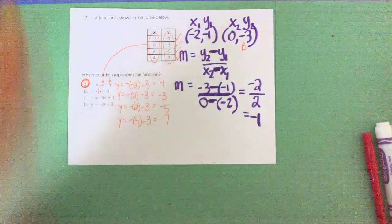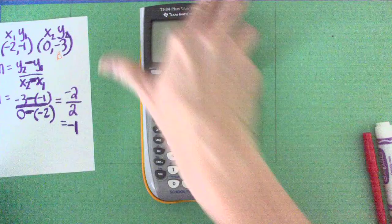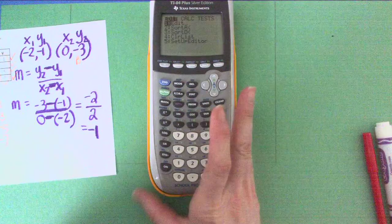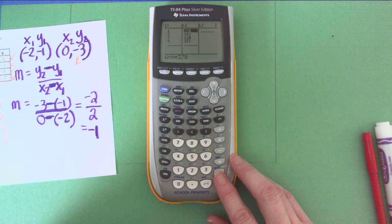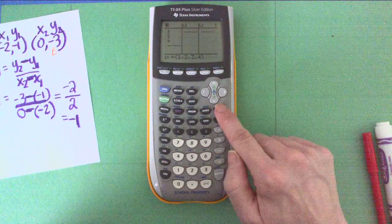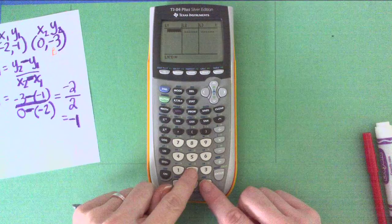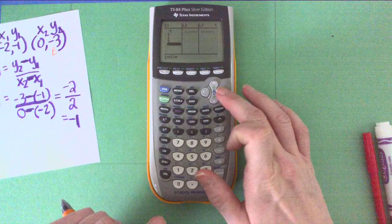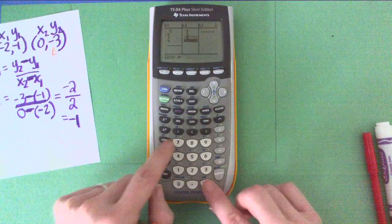And the final way you could do this is back to the TI-84 again. If you take your TI-84 and hit stat - we went through this earlier, I'm not sure if you watched that video - stat, edit. And you highlight L2, clear, enter. Highlight L1, clear, enter. It's going to give you a clean slate. Put in all your x's. I've got negative 2, 0, 2, and 4. Put in all your y's: negative 1, negative 3, negative 5, negative 7.